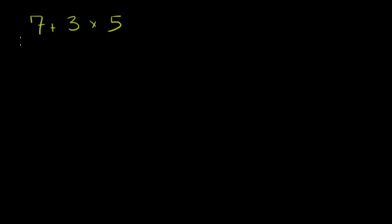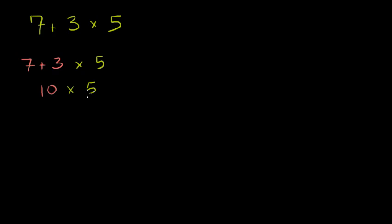Take the statement 7 plus 3 times 5. You could just read it left to right — take 7 plus 3, then multiply that times 5. 7 plus 3 is 10, and then 10 times 5 gives you 50. So that's one way you could interpret it: just go left to right.